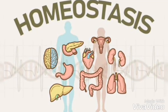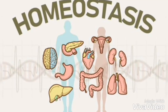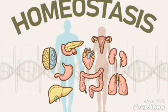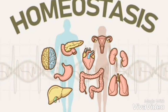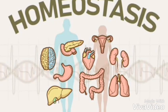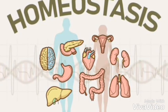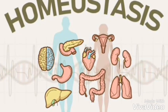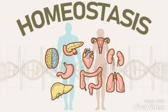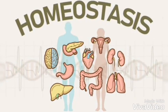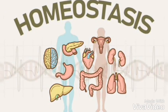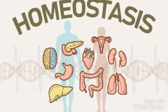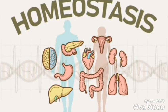Homeostasis can simply be referred to as the body's tendency to maintain the balance of relatively stable conditions like blood glucose levels, temperature, blood pressure, pH levels, and the list goes on.